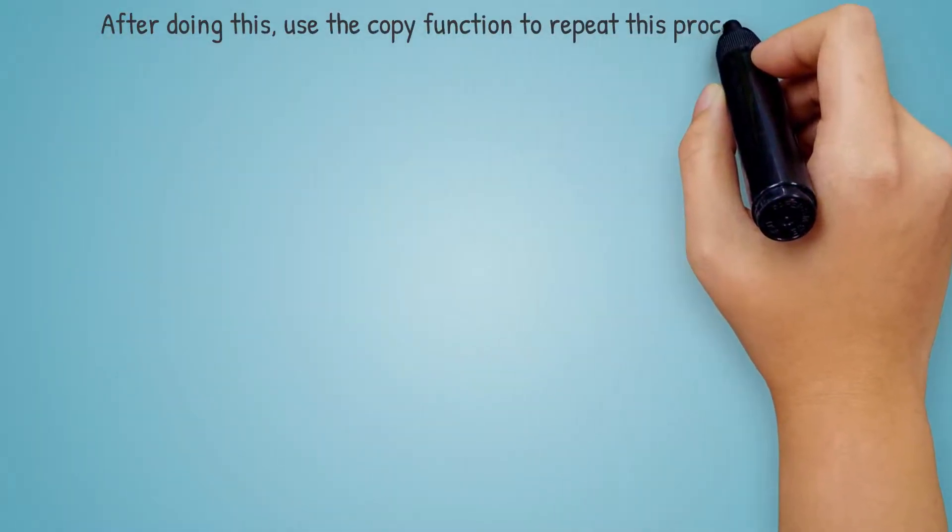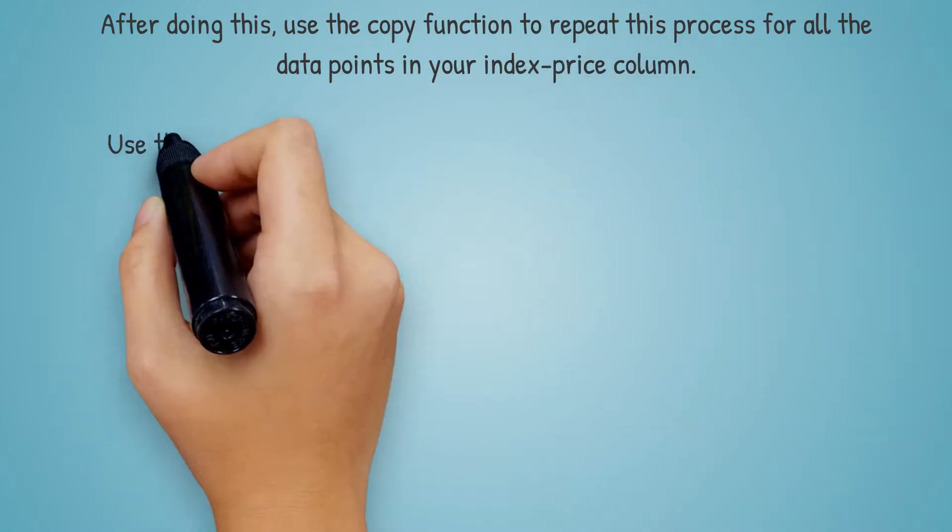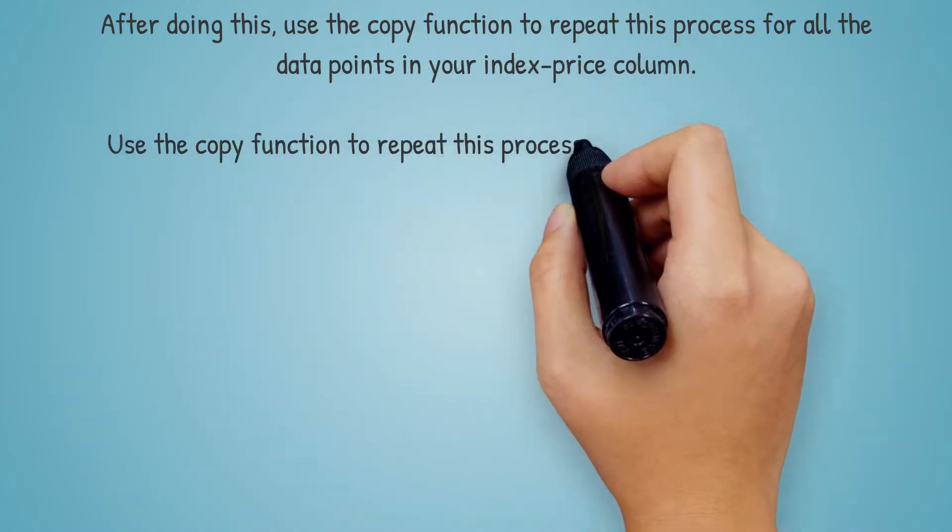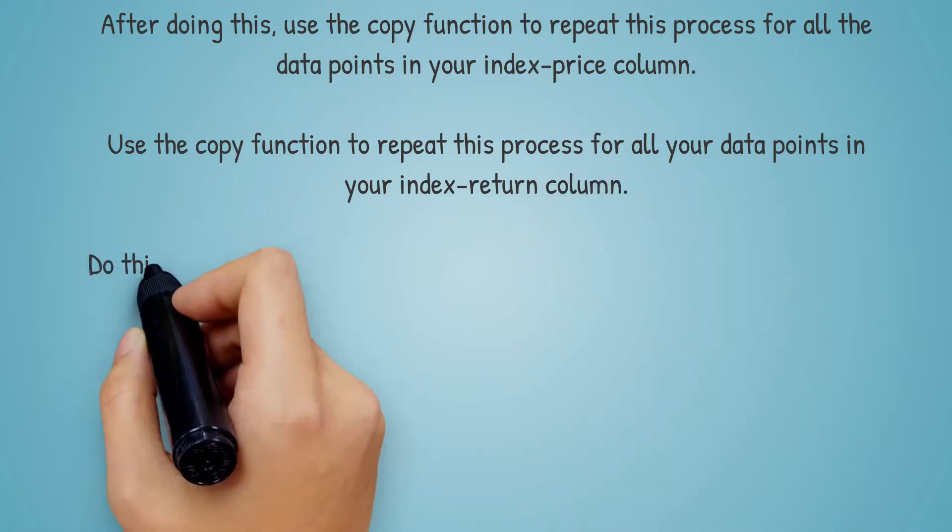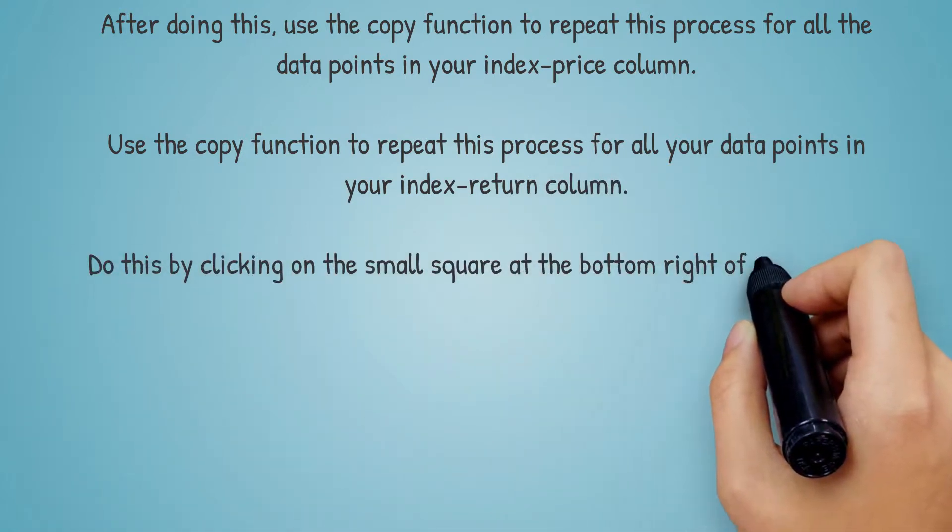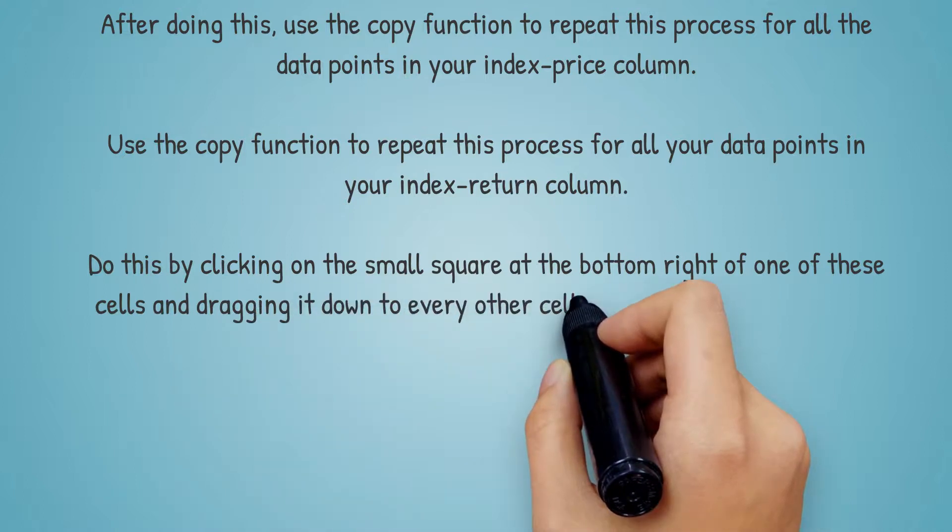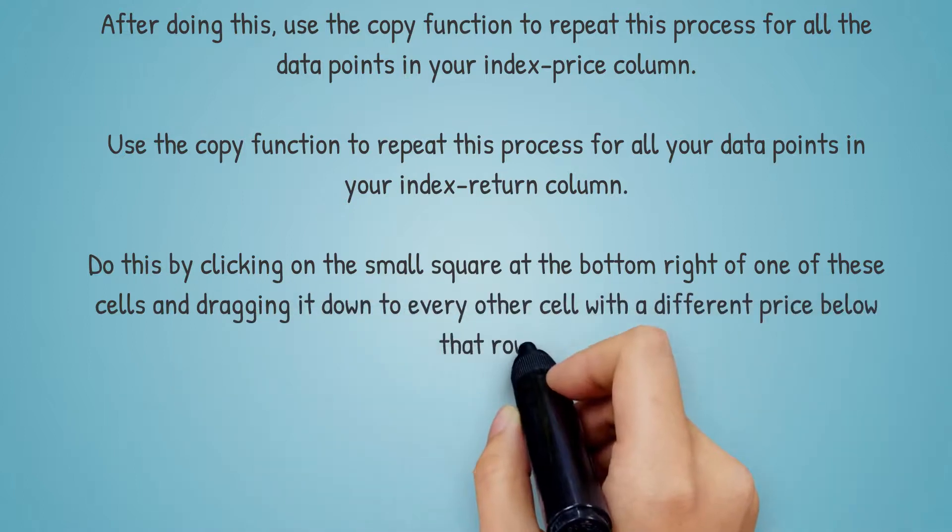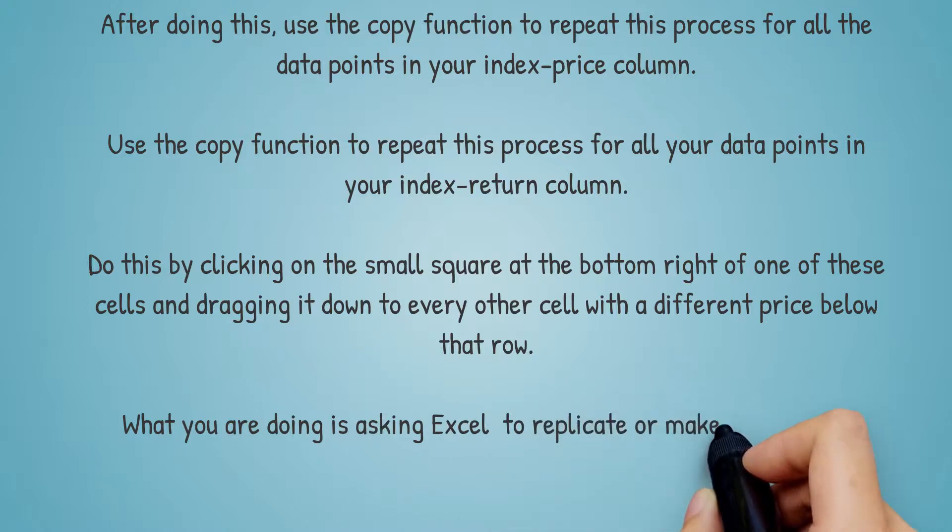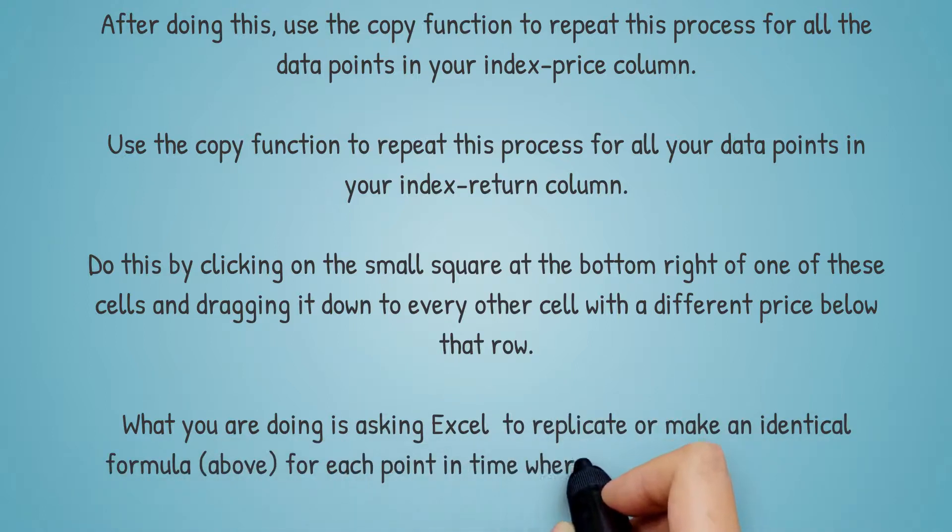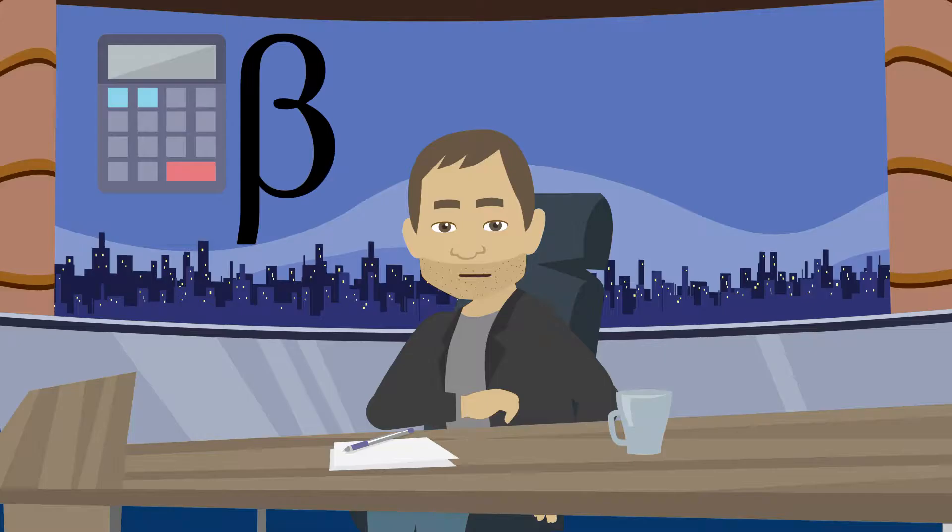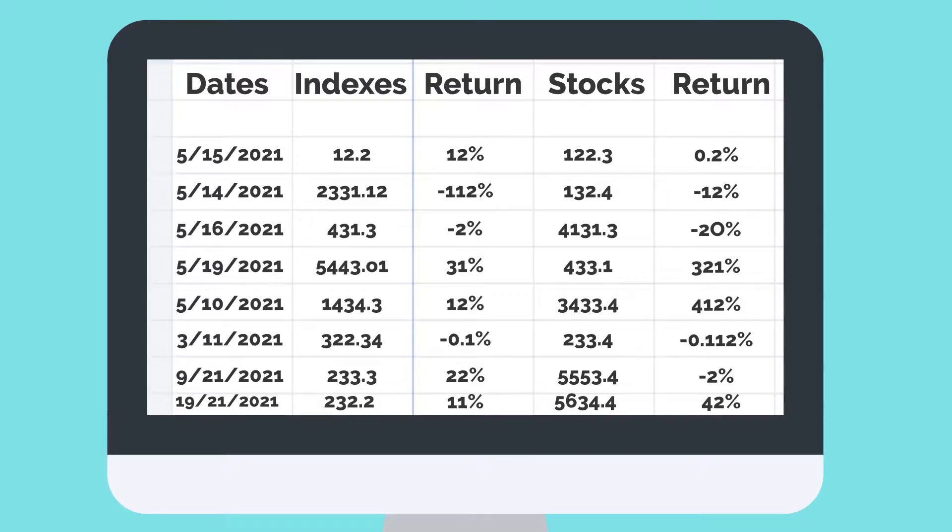After doing this, use the copy function to repeat the process for all the data points in your index price column. Use the copy function to repeat the process for all your data points in your index return column. Do this by clicking on the small square at the bottom right of one of those cells and dragging it down to every other cell with a different price below that row. What you are doing is asking Excel to replicate or make an identical formula as above for each point in time where there's more than just one showing up under index price. After doing so, you should repeat the same process for calculating returns, this time for the individual stock instead of the index.